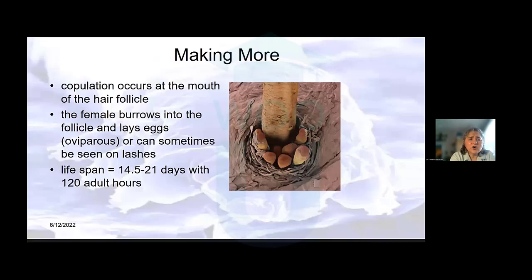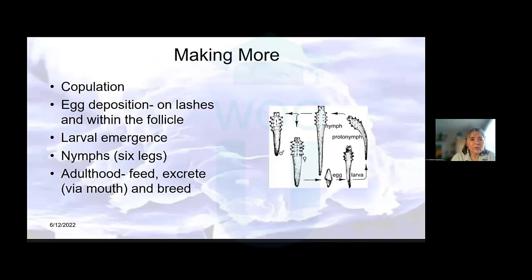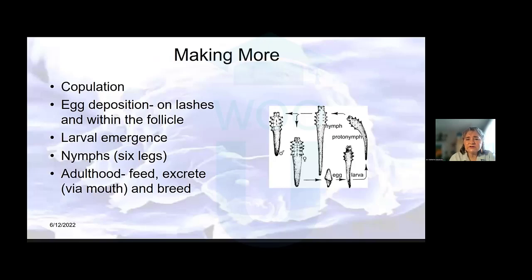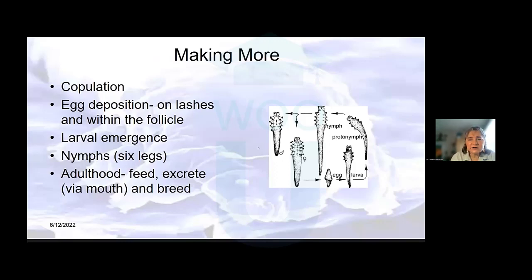Demodex live for two to three weeks with about 120 adult hours. Their life cycle includes copulation, male and female; egg deposition, either on the lashes or within the follicle or gland. Like frogs, the eggs morph through a larva and a nymph — a proto-nymph and a nymph — until they reach their adult configuration, male and female. The young demodex mites only have six legs and will grow their last set of legs as an adult, at which point they locomote, feed, excrete, breed, and do their demodex thing.